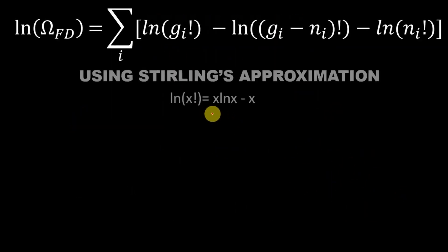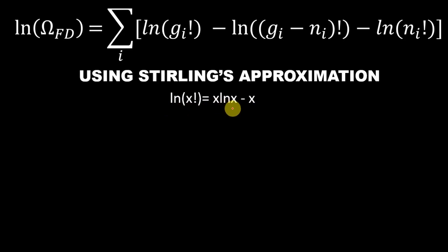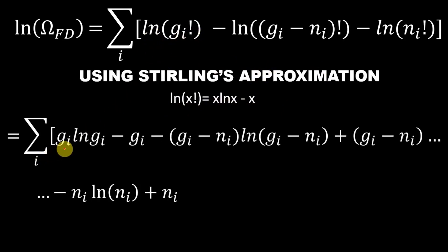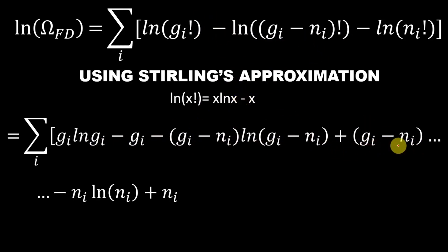Now we apply Stirling's approximation, which states log(x!) = x·log(x) - x. So log(G_i!) becomes G_i·log(G_i) - G_i; minus log(G_i - N_i)! becomes minus [(G_i - N_i)·log(G_i - N_i) - (G_i - N_i)]; and minus log(N_i!) becomes minus [N_i·log(N_i) - N_i]. The G_i terms and N_i terms cancel each other, leaving a simplified expression.